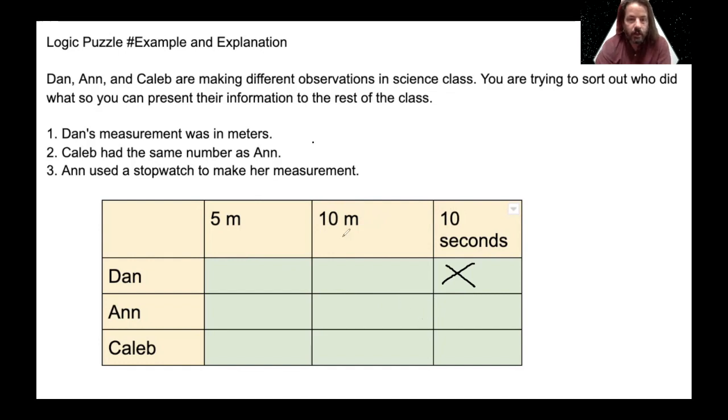Ann used a stopwatch to make her measurement. Okay, so Ann used a stopwatch to make her measurement. Well, that means Ann is the only one that had to measure a time. So when I place a check, we know that Ann belongs to 10 seconds and she cannot belong to anything else. So we're going to mark X's because she cannot have 10 meters, she cannot have 5 meters. And if Ann has 10 seconds, then Dan cannot have 10 seconds, Caleb cannot have 10 seconds. So there's only one check per row per column.